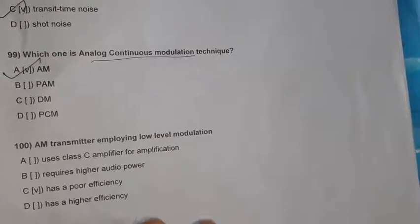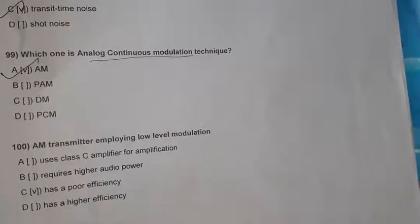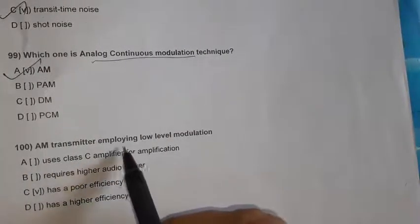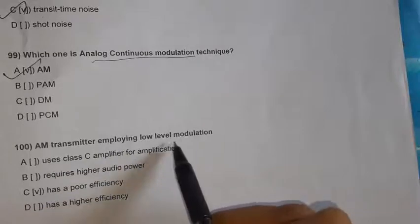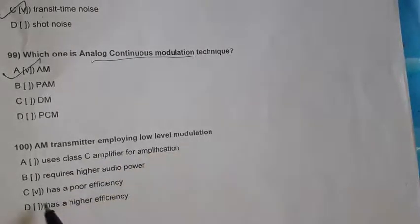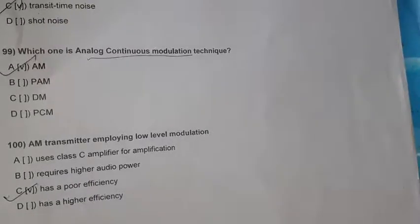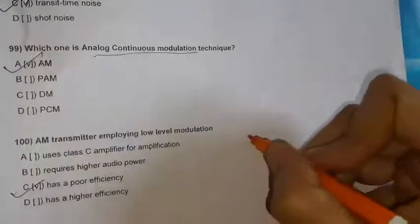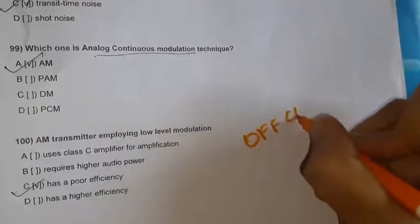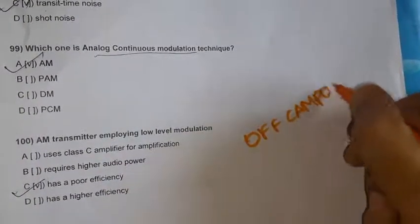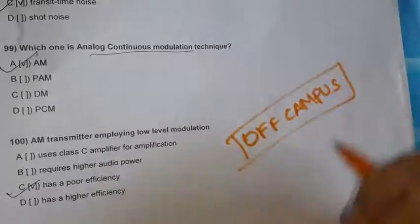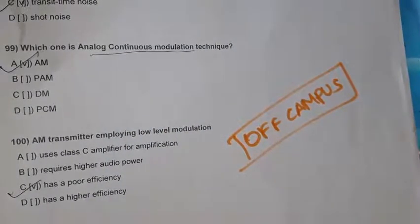Question 100: An AM transmitter employing low level modulation has a poor efficiency — that is the right option. Kindly subscribe our channel Off Campus and click on the bell icon so you will receive notifications when we upload videos. Kindly check the playlist. Thanks for watching.